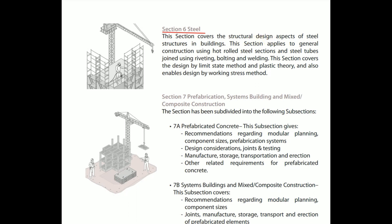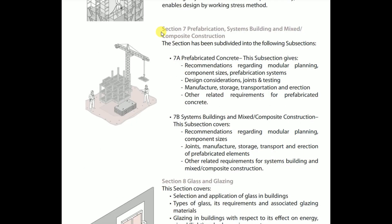Section 6 covers steel. This section covers the structural design aspects of steel structures in buildings, applying to general construction using hot-rolled steel sections and steel tubes joined by riveting, bolting, and welding. It covers design by the limit state method and plastic theory, and also enables design by the working stress method.